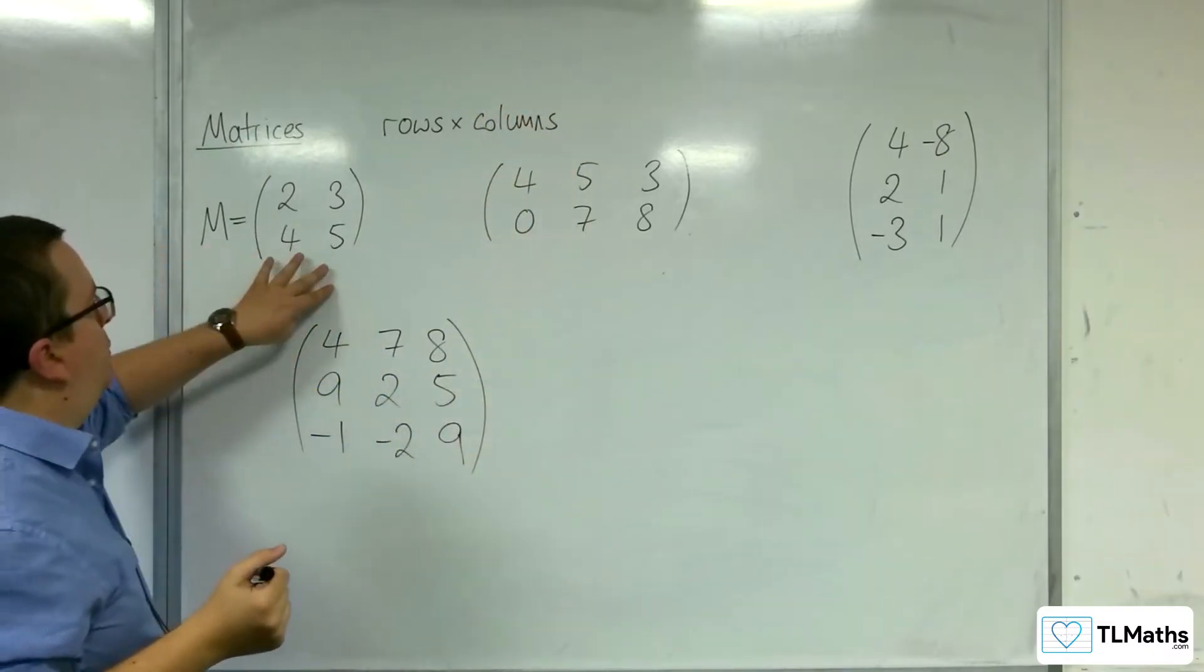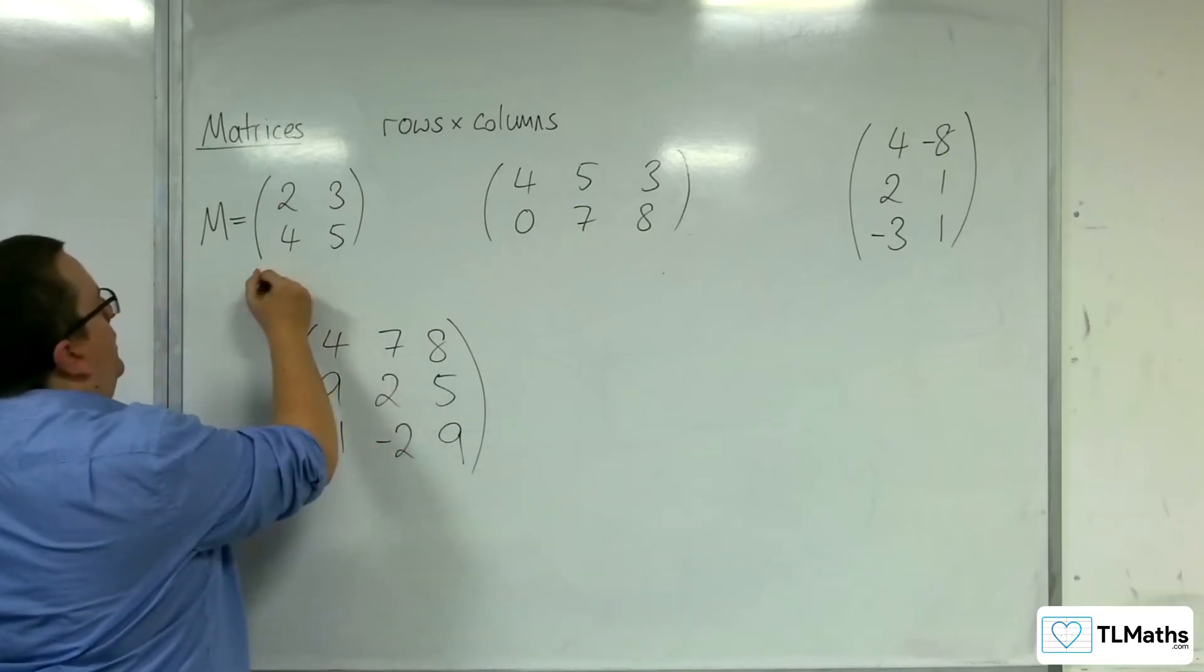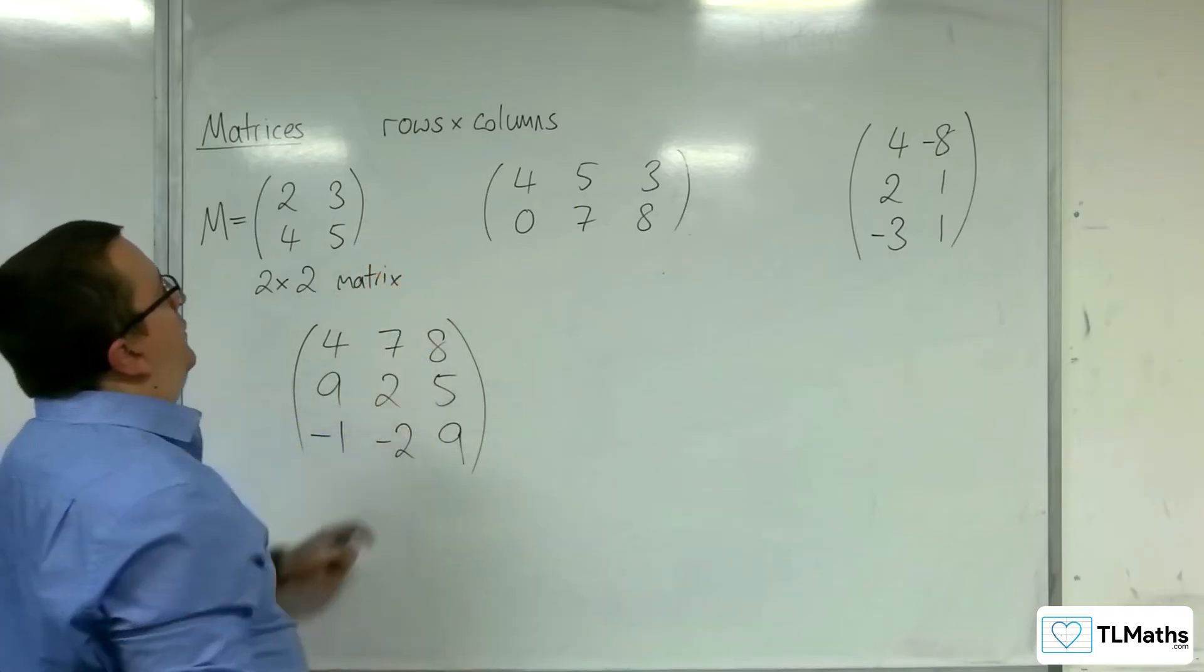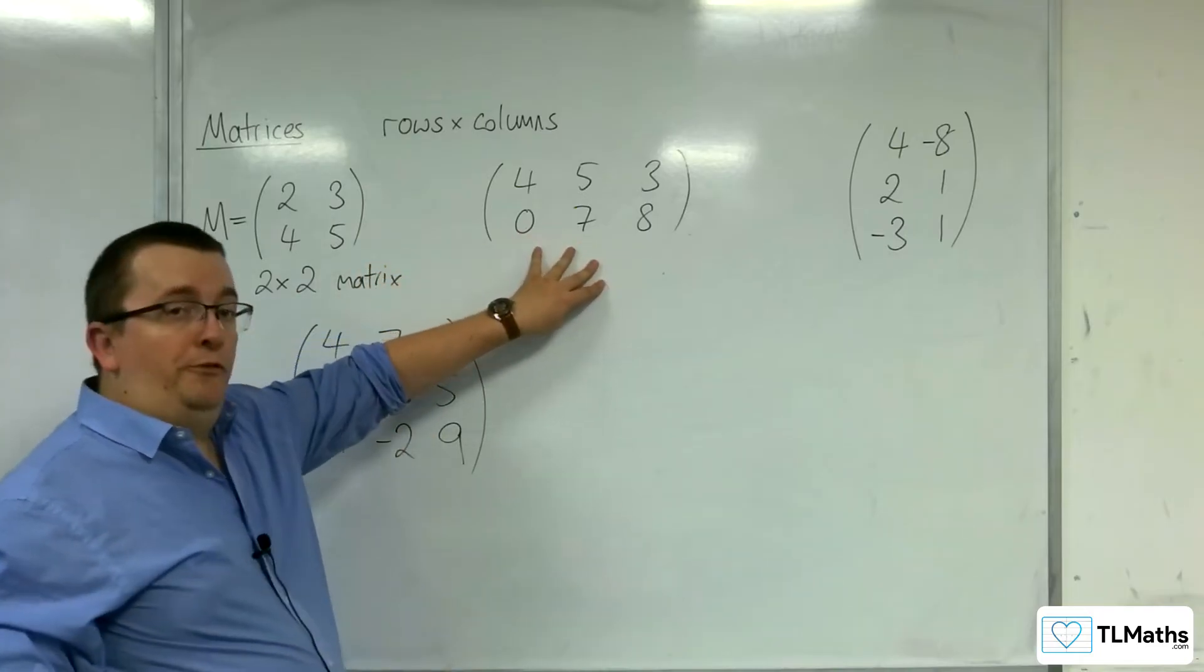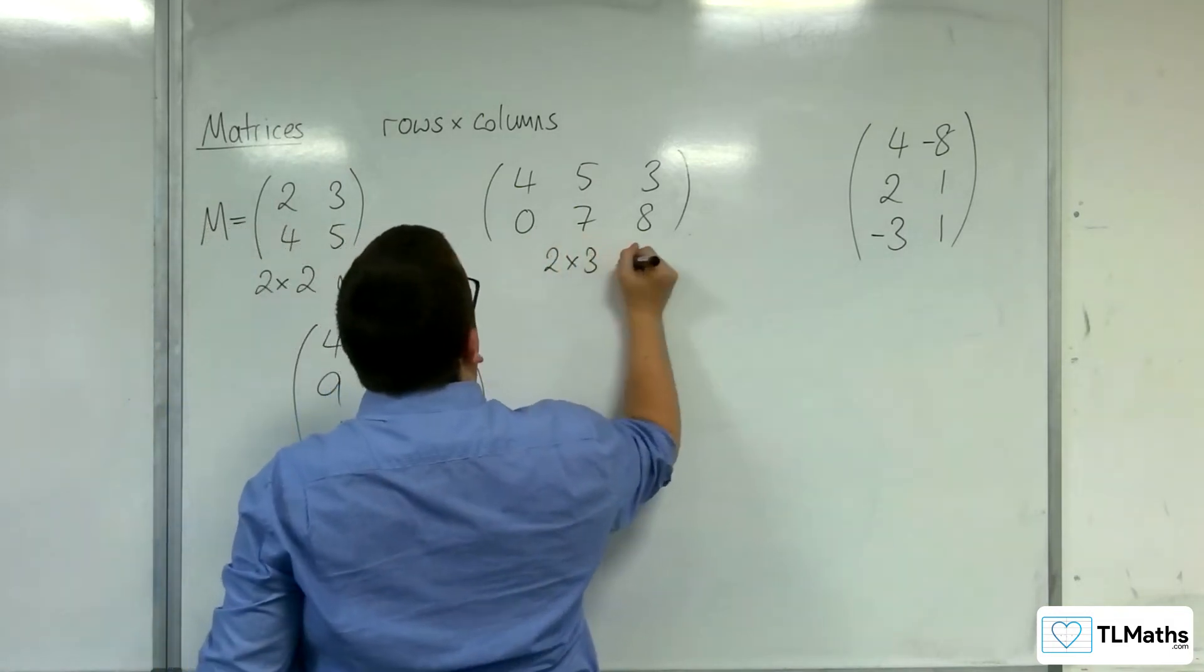So for this one, we would refer to that as a two-by-two matrix. Whereas this one, because we're going number of rows first, we go two-by-three: two rows, three columns.